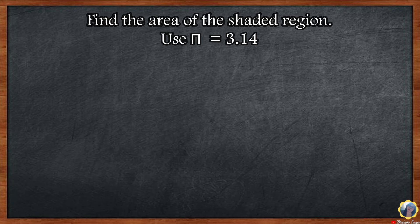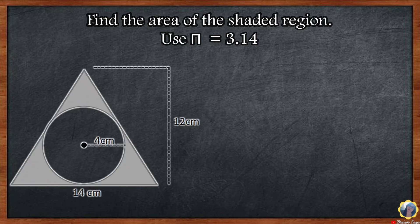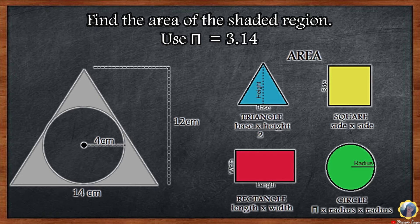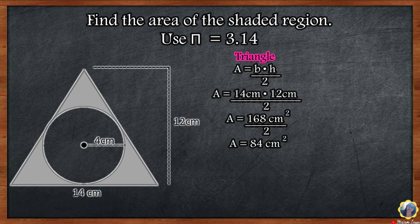Another example: Find the area of the shaded region. Use pi equals 3.14. This time, we need to find the area of the shaded region. Based on our figure, we have a circle inside a triangle. Let us find the area of the triangle and the circle. Step 1: Find the area of the triangle. The formula is base times height divided by 2. The base is the bottom part on which the figure rests. 14 centimeters times 12 centimeters equals 168 square centimeters. 168 square centimeters divided by 2 equals 84 square centimeters. That is the area of the triangle.